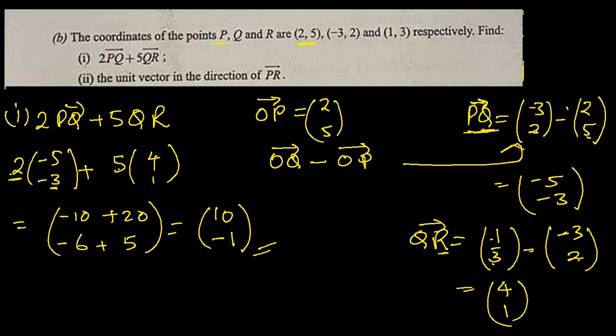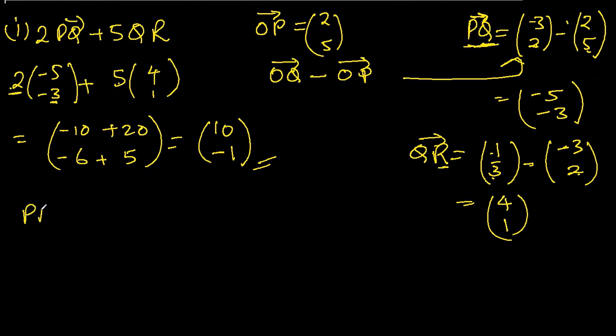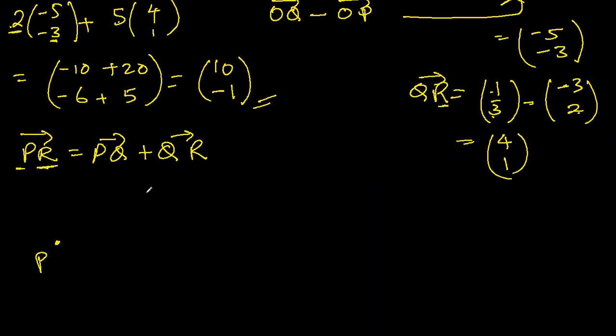The unit vector in the direction of PR. So we don't know PR right now. PR will be PQ plus QR. We know PQ and QR both. You could have also done the position vector of R minus position vector of P.